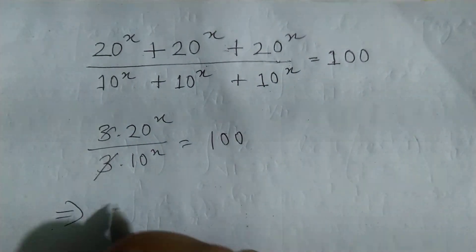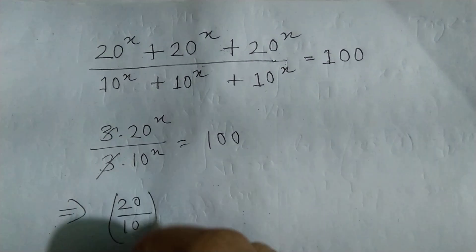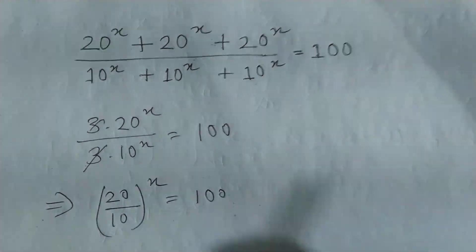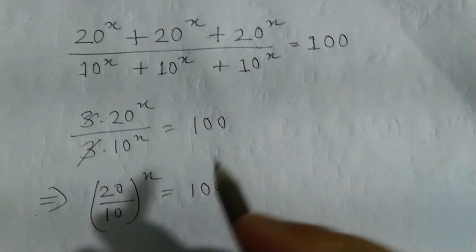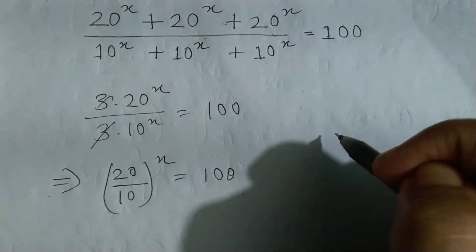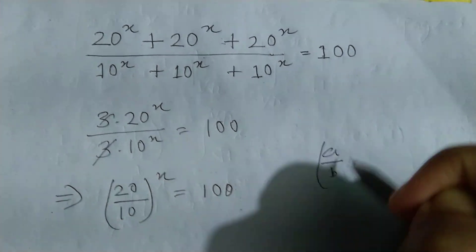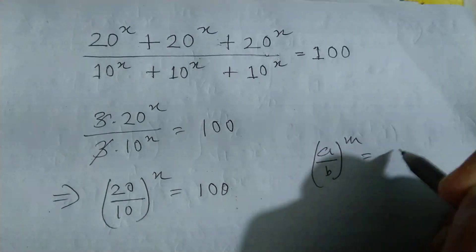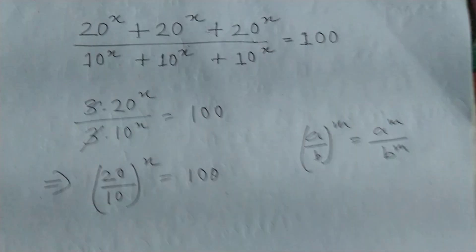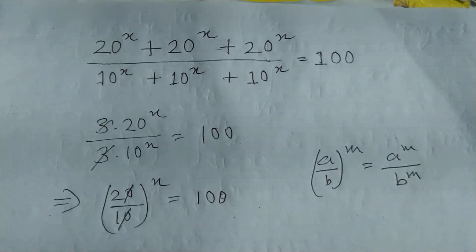Now friends, how can I solve? Because the power of indices rule means (a/b)^m equals a^m divided by b^m. So it is canceled and we get 2^x = 100.